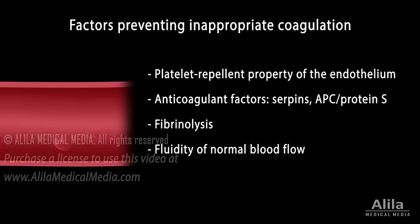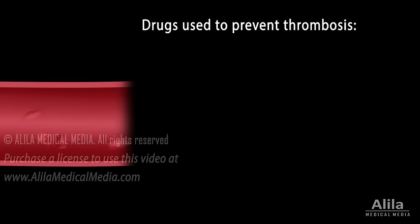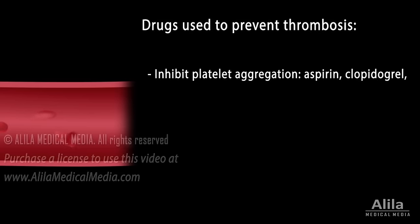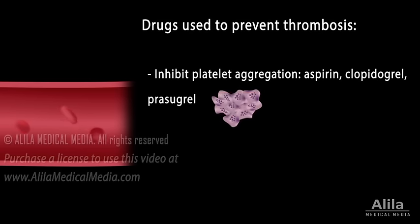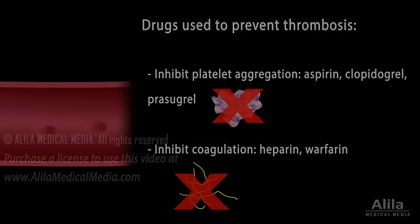Fluidity of normal blood flow also helps dilute the small amount of thrombin that forms spontaneously. Decreased flow, or stagnation of blood, may increase risks for thrombosis. People with high risks of unwanted blood clotting are treated with drugs that inhibit platelet aggregation, such as aspirin, or drugs that inhibit coagulation, such as heparin or warfarin.